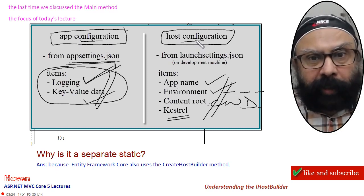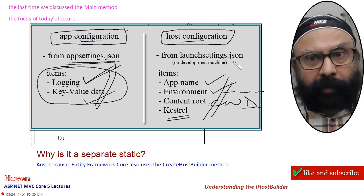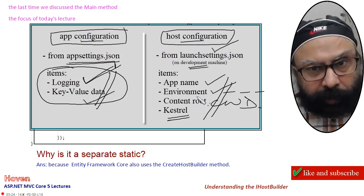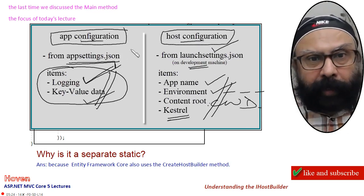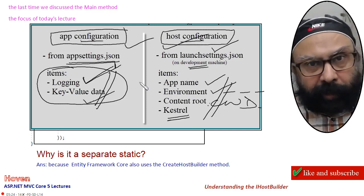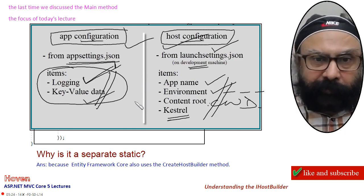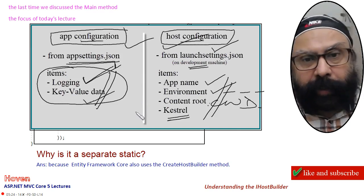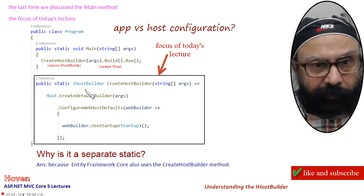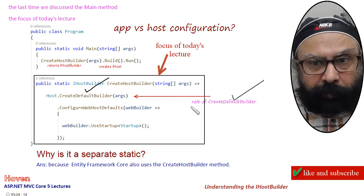Host configuration is done by also reading the launchSettings.json file. This file is available on the development machine only. If it is available, then this file is also read. And both these configurations can additionally be done by reading environment variables on the machine. For every detail, please refer to the previous video. Now let us move to the details of createDefaultBuilder.